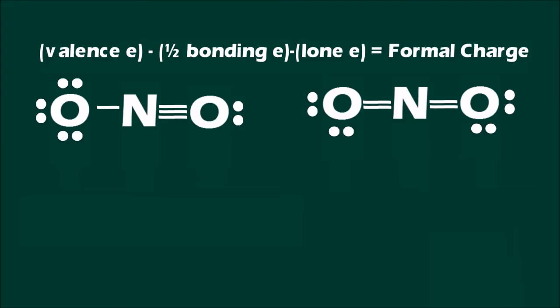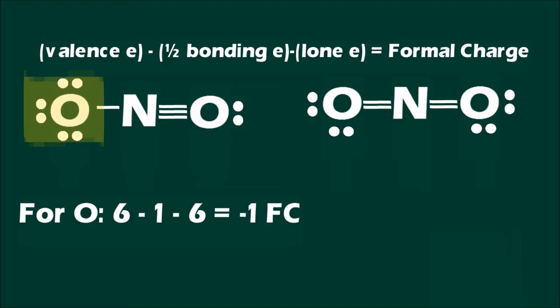Let's calculate the formal charge of the first structure. This structure has one single bond between the nitrogen and an oxygen and one triple bond between the nitrogen and an oxygen. For the singly bonded oxygen, the formal charge is six valence electrons minus one half the bonding electrons minus the six lone electrons on the oxygen. This gives a formal charge of negative one on the singly bonded oxygen atom.